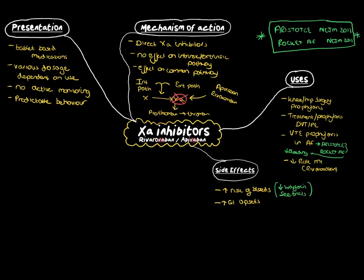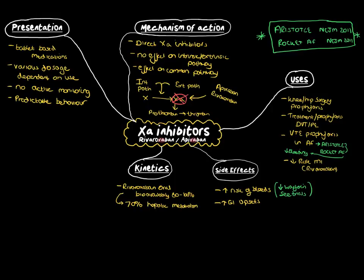When we think about the pharmacokinetics, rivaroxaban has an oral bioavailability of about 80% to 100%. It's 70% hepatically metabolised, and therefore doesn't have a lot of renal involvement, and therefore is usable in people with low creatinine clearance states, such as a creatinine clearance of 15% or a GFR of 15%.